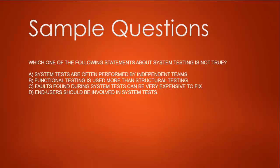Option A — system tests are often performed by independent teams — this is not exactly false, as some independent teams do perform system tests. Option B — functional testing is used more than structural testing — this is true. Option C — faults found during system testing can be expensive to fix — this is true, as fixing requires going through the whole chain from requirements to implementation. Option D — end users should be involved in system tests — this is not true; end users are only involved in beta testing or user acceptance testing. So the answer is D.